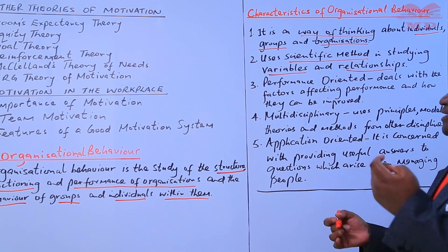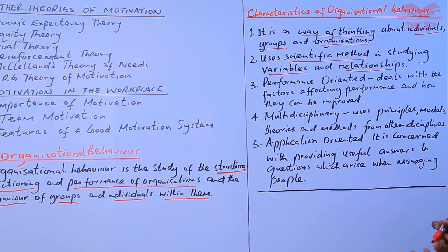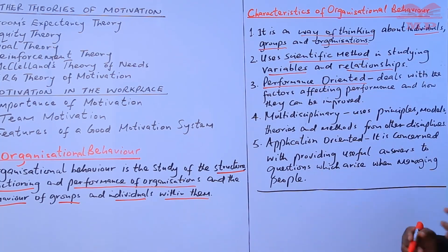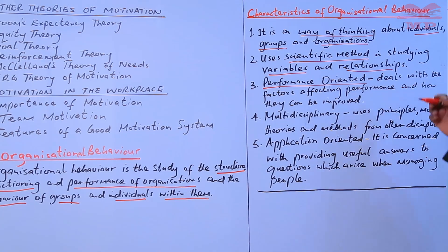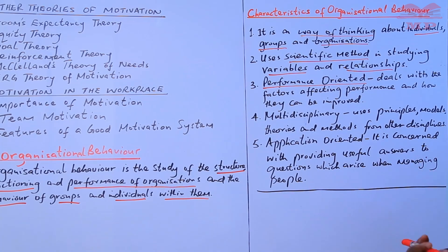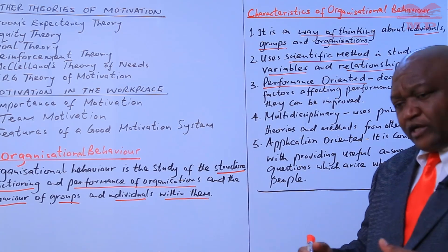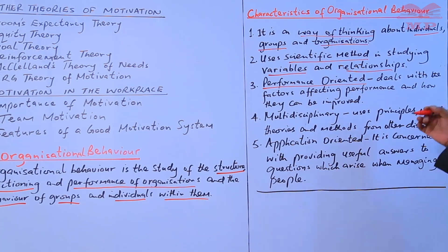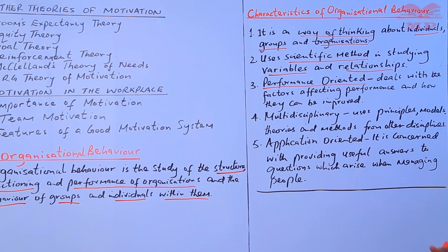The third characteristic of organizational behavior is that it is performance-oriented. It deals with factors affecting performance and how they can be improved. For example, using a PESTEL analysis, you examine political, economic, social, and legal aspects, and how these particular aspects impede or underlie the performance of organizations.